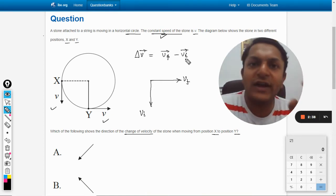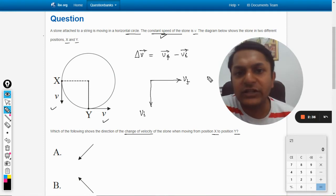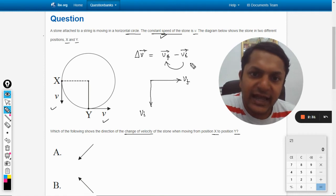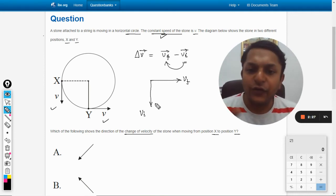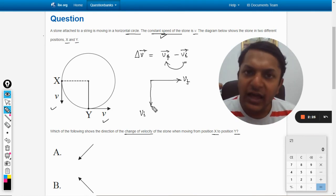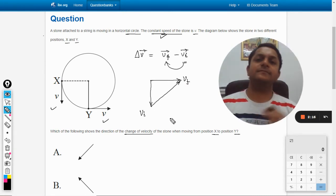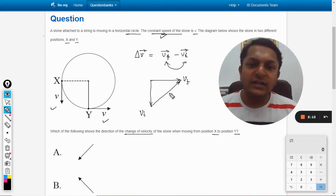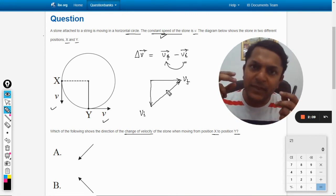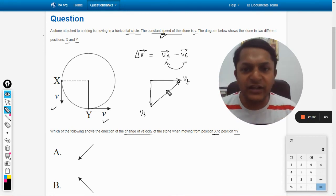This is v initial, so initial is ending at this point and final is this. So when we subtract the two vectors graphically, what we do is we draw another vector like this, the vector that starts from the head of v initial and it will be ending at the head of final velocity vector. So it will be taken like this. I hope I am clear.